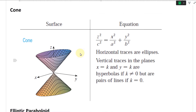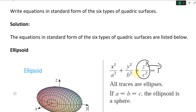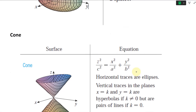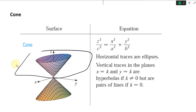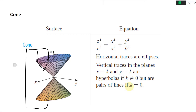And the cone — so you have a cone like here. Instead of the ellipsoid equation, the z squared term moves to the other side, and you get rid of the one. So that's the difference. You get this cone. Horizontal traces are ellipses — if you cut them horizontally, you get ellipses. Vertical traces in the planes x equals k and y equals k are hyperbolas if k is not equal to zero, but pairs of lines if k equals zero. Otherwise the vertical traces will be hyperbolas.